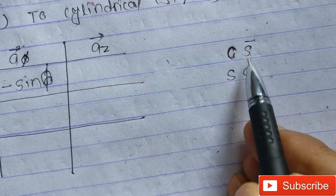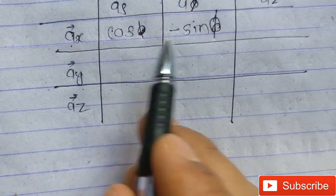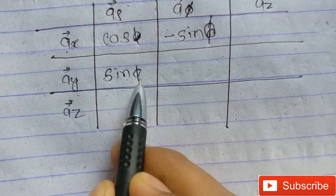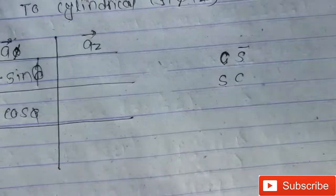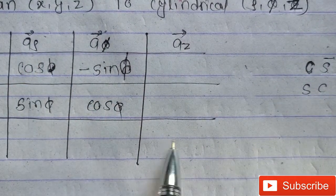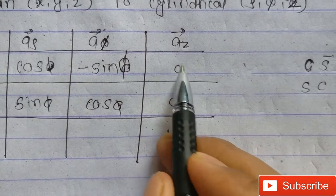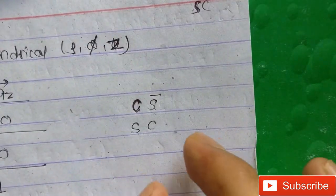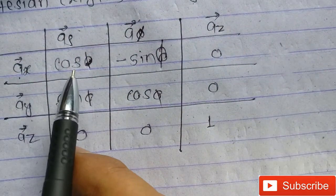So the pattern is: cos, minus sine, sine, cos. That is: cos phi, minus sine phi, sine phi, cos phi. From this technique you can easily remember this formula. The last row gets values of one and then zeros — zero, zero, zero, and zero.